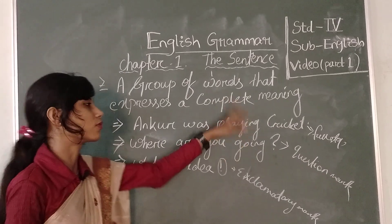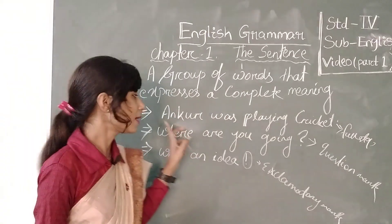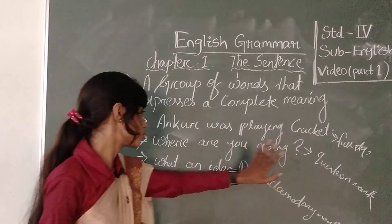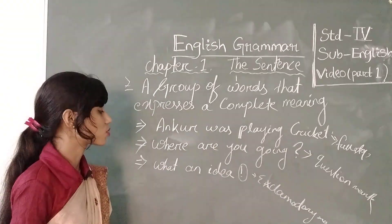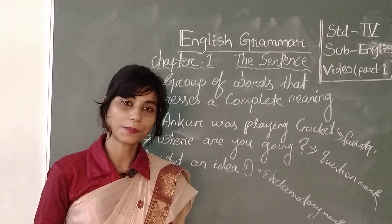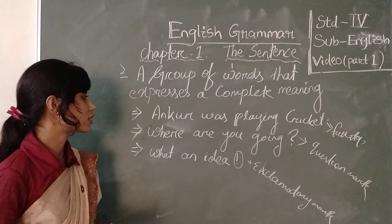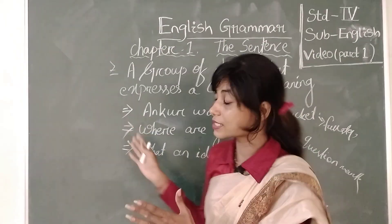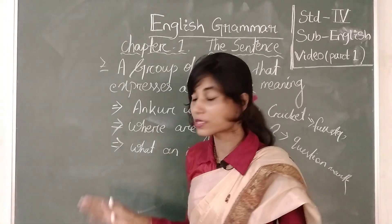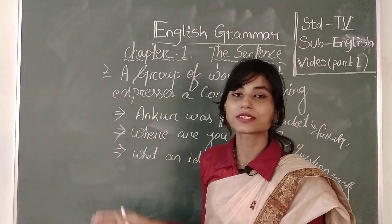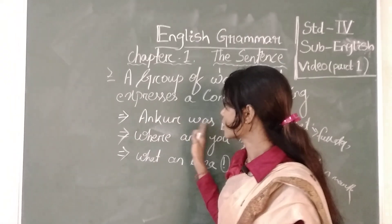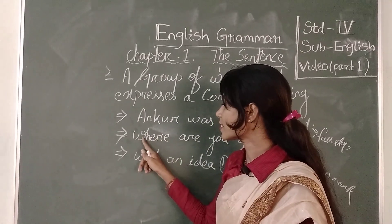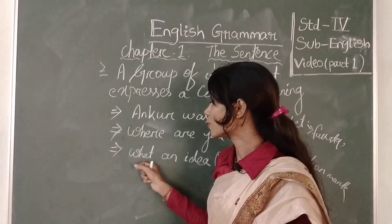'Ankur was playing cricket.' What was being played by Ankur? Cricket was being played by Ankur. 'Where are you going?' Here the question mark has been put. 'What an idea!' This is an exclamatory sign because it is expressing a complete feeling of surprise. So we know two things about how to identify a sentence. First, the first letter must be capital — like 'Ankur' starts with A which must be capital, and 'Where' starts with W which must be capital.